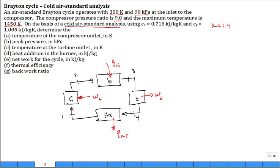But what are they asking for for part A? The temperature at the compressor outlet, that's T2. The peak pressure, that's P2, which is also equal to P3 because it's constant pressure through the burner. What is the temperature at the turbine outlet, that's T4?